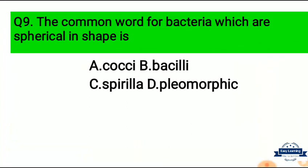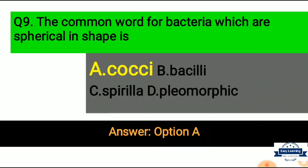Question 9: The common word for bacteria which are spherical in shape is — Option A: Cocci, Option B: Bacilli, Option C: Spirilla, Option D: Pleomorphic. Correct answer is Option A, Cocci. Cocci are spherical in shape.